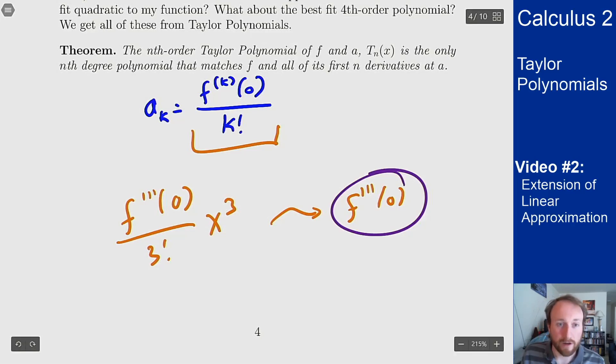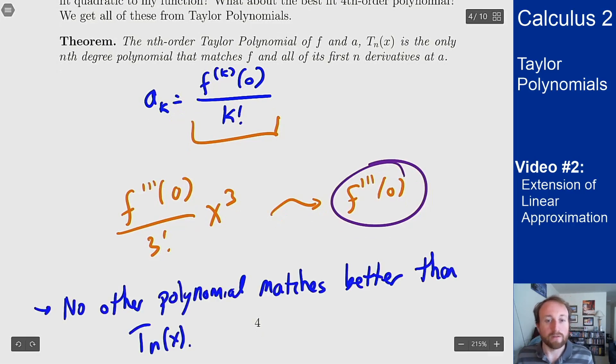Since it matches the function and its first n derivatives, it's the best fit we can get to this curve. You can't pick different constants to be better than the ones from the Taylor polynomial. That's the point of using this to approximate a function—it's the best you can do with an nth degree polynomial.